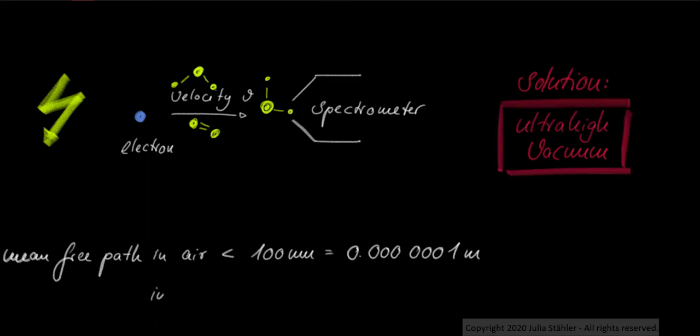In our experiments, we reduce the pressure to 10 to the minus 10 millibar, which corresponds to a mean free path of photoemitted electrons larger than 1000 kilometers.